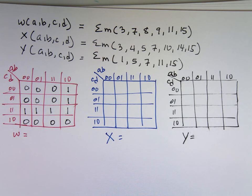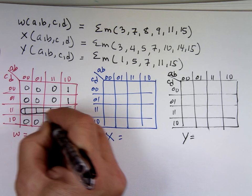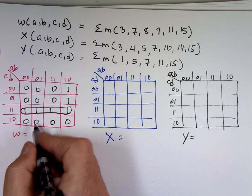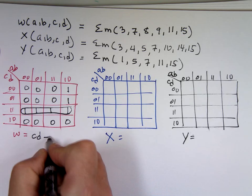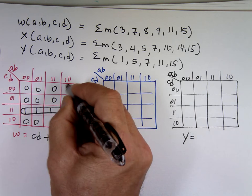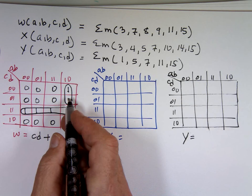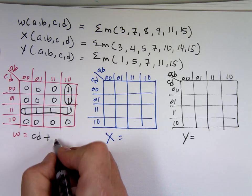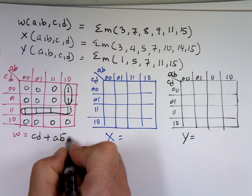That's the W K-map. Reading it, there are four ones which group to give C and D, plus these two which give AB̄C̄.